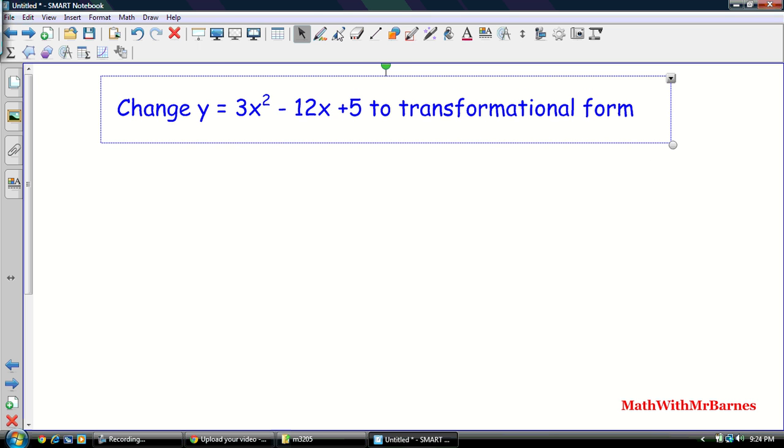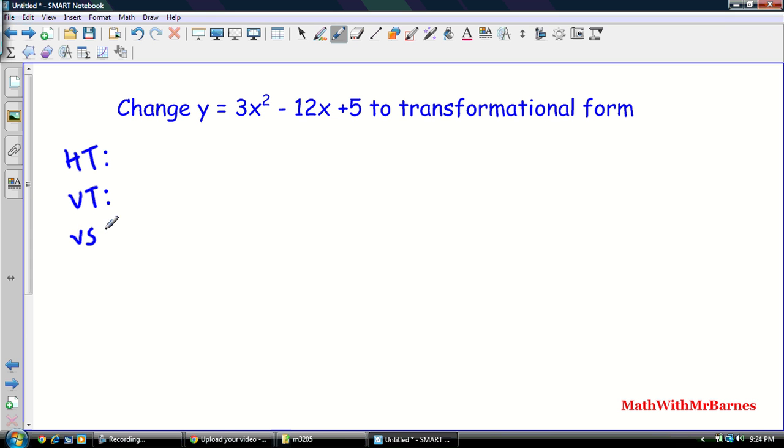All right, so the alternate method wants us to use HT, VT, VS, REF. My HT, of course, is my axis of symmetry, which you remember is negative B over 2A, which is going to be negative, negative 12, so 12, positive 12 over 2 times 3, which is a positive 2.